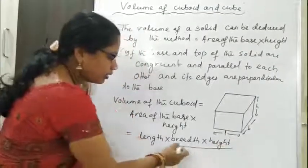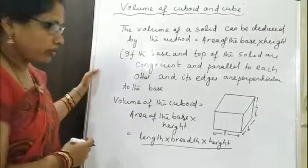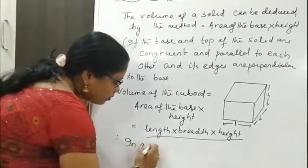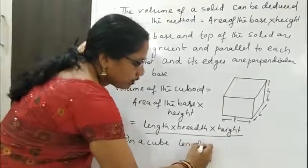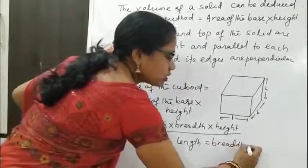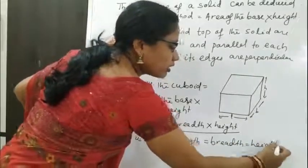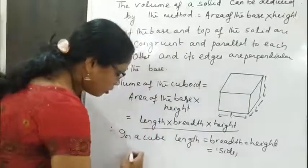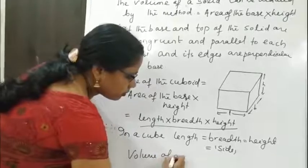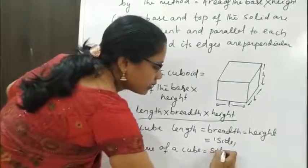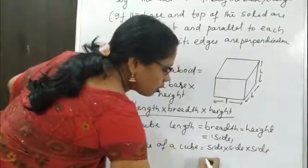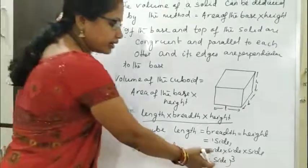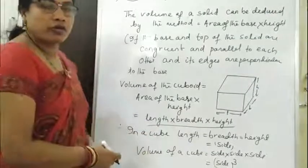Now, what is the volume of a cube? In a cube, length equals breadth equals height — all dimensions are equal. So each dimension is called the side. Therefore, the volume of a cube equals side × side × side, which equals side cubed. Volume of a cube is side³, and volume of a cuboid is length × breadth × height.